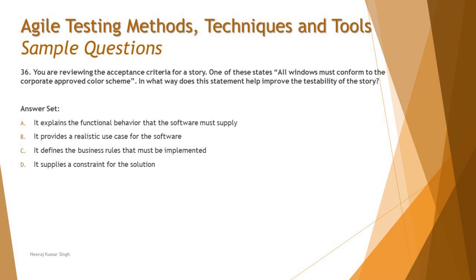Option A says: it explains the functional behavior the software must supply — no, because a color scheme is just a theme or pattern, not functional behavior. Option B says: it provides a realistic use case — no, a use case is a set of functional actions, not a color standard. Option C says: it defines the business rules that must be implemented — no, business rules relate to business or system logic, not a color scheme.